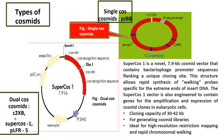Examples of dual-Cos Cosmids are C2XB and SuperCos-1, and pLFR5. SuperCos-1 is a novel 7.9 KB Cosmid vector that contains bacteriophage promoter and promoter sequences flanking a unique cloning site. This structure allows rapid synthesis of walking probes specific for the extreme ends of insert DNA.